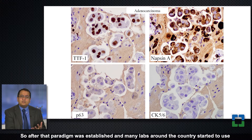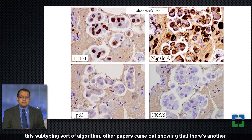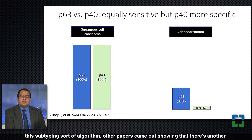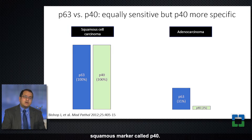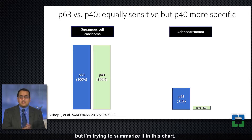After that paradigm was established and many labs around the country started to use this subtyping algorithm, other papers came out showing there's another squamous marker called p40. The difference between p63 and p40 is frequently misunderstood, but I'm trying to summarize it in this chart.